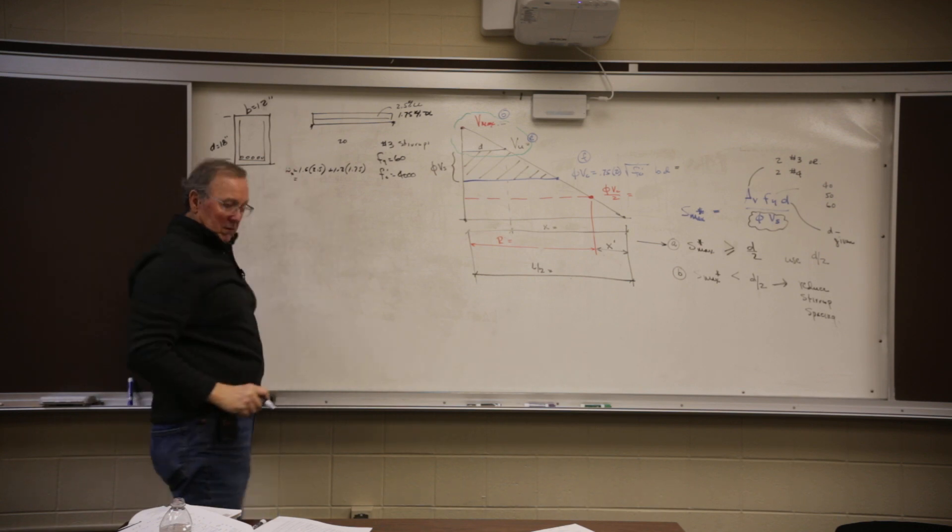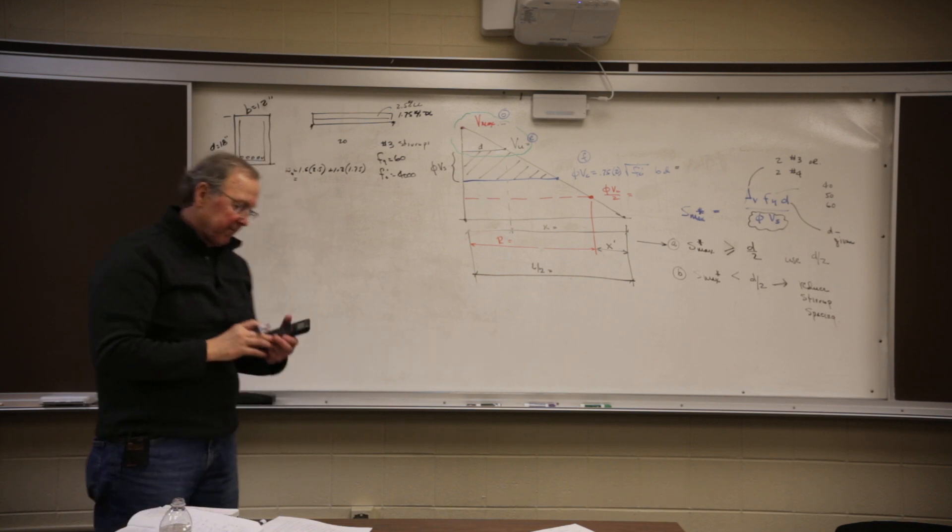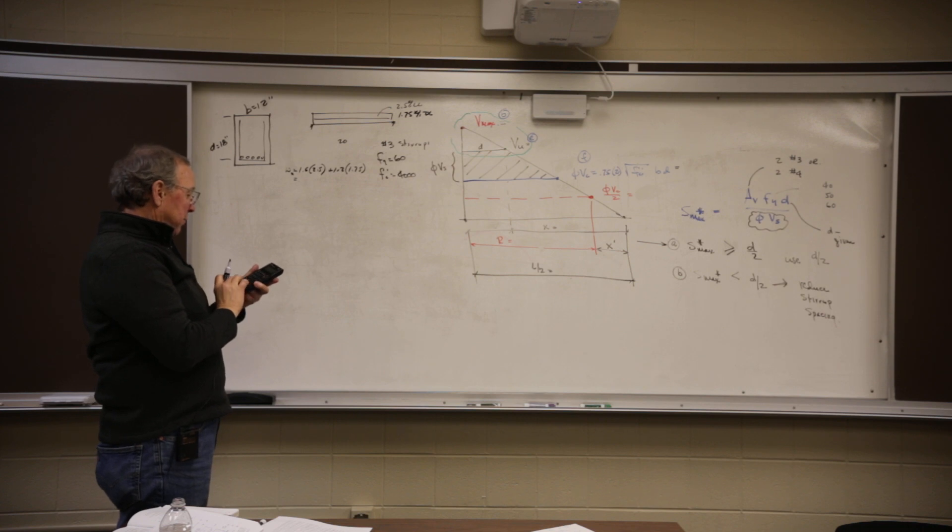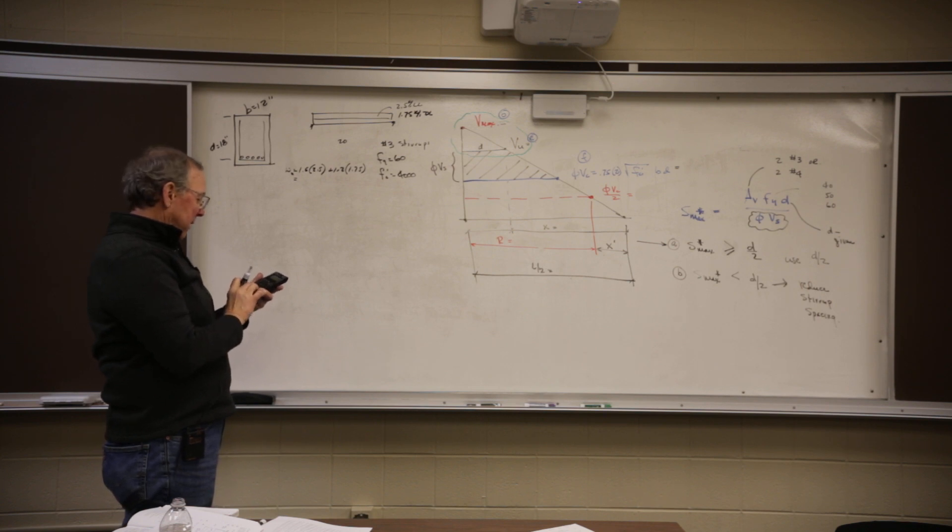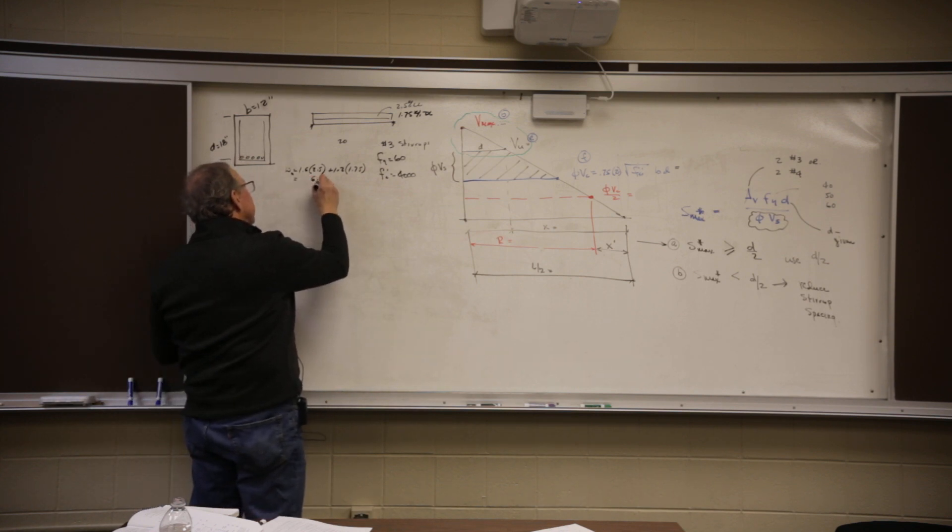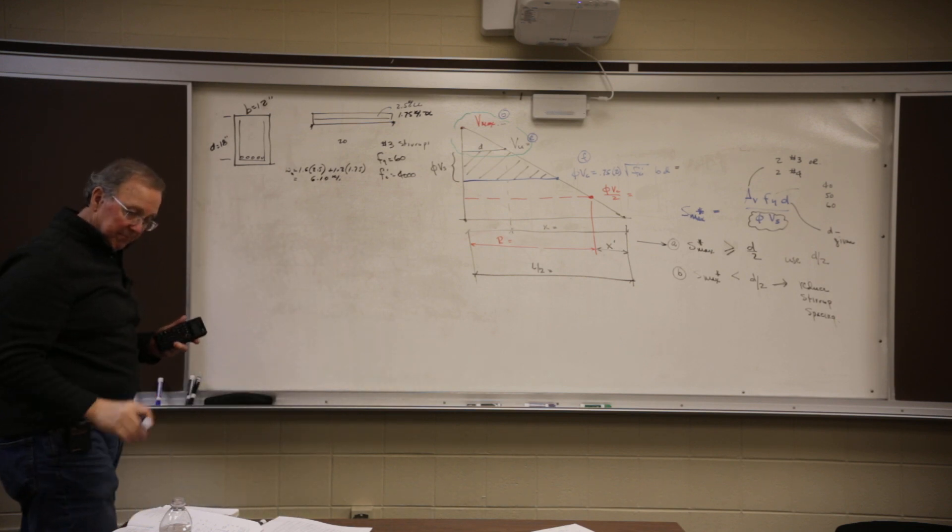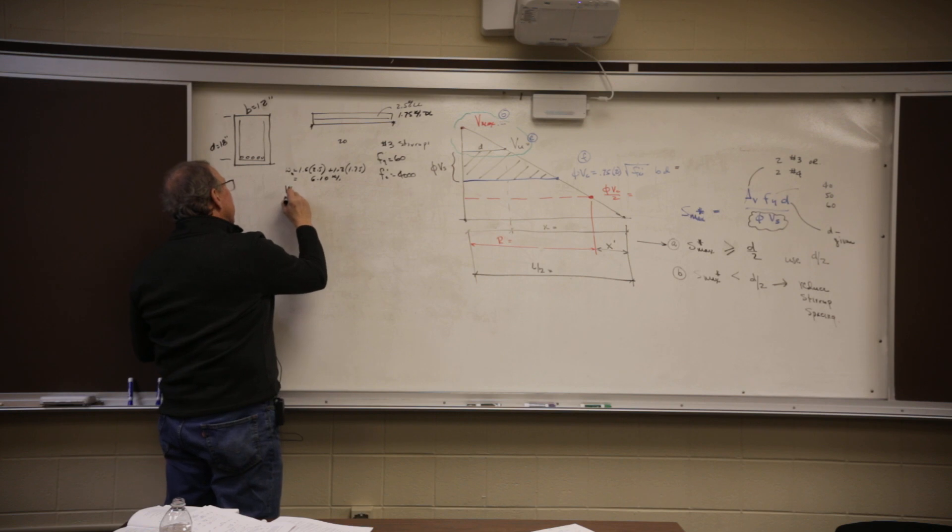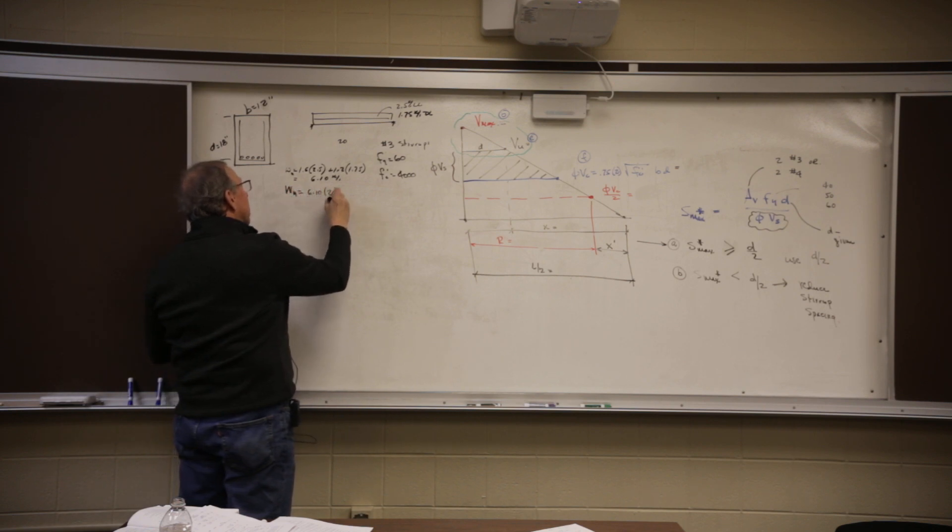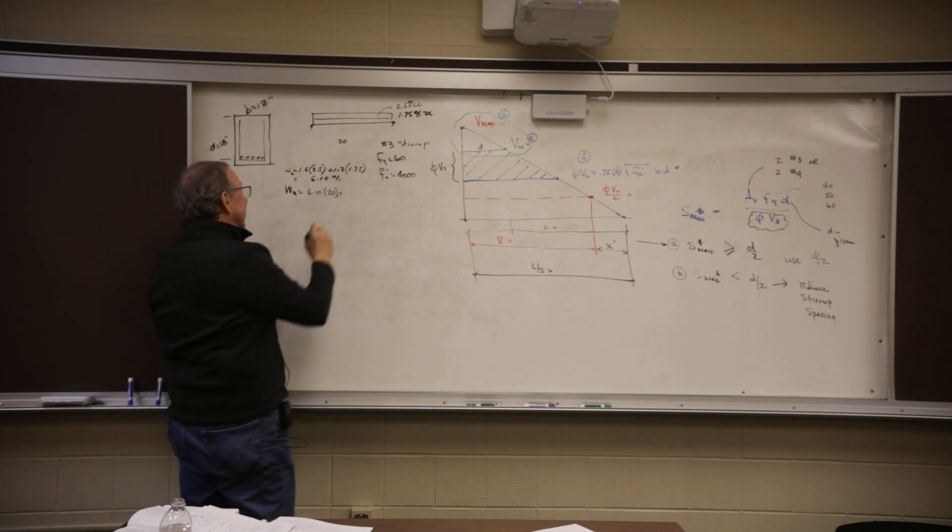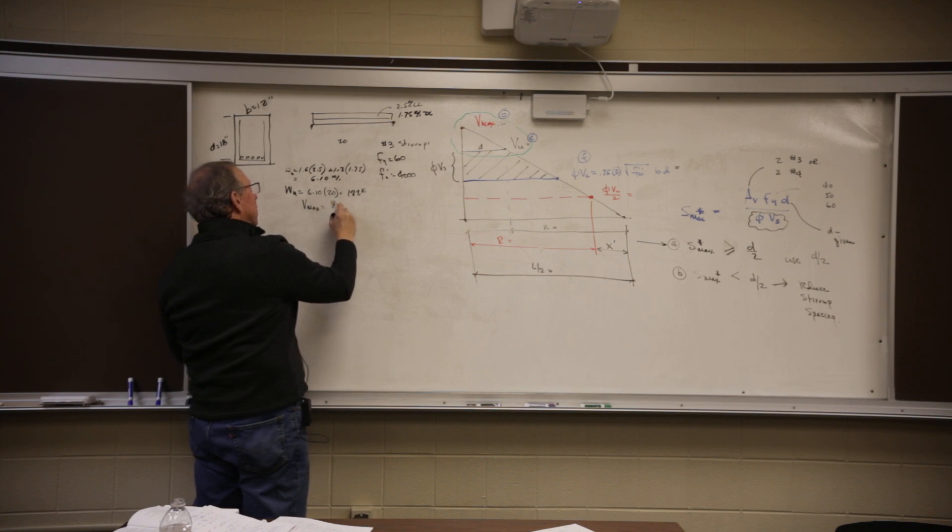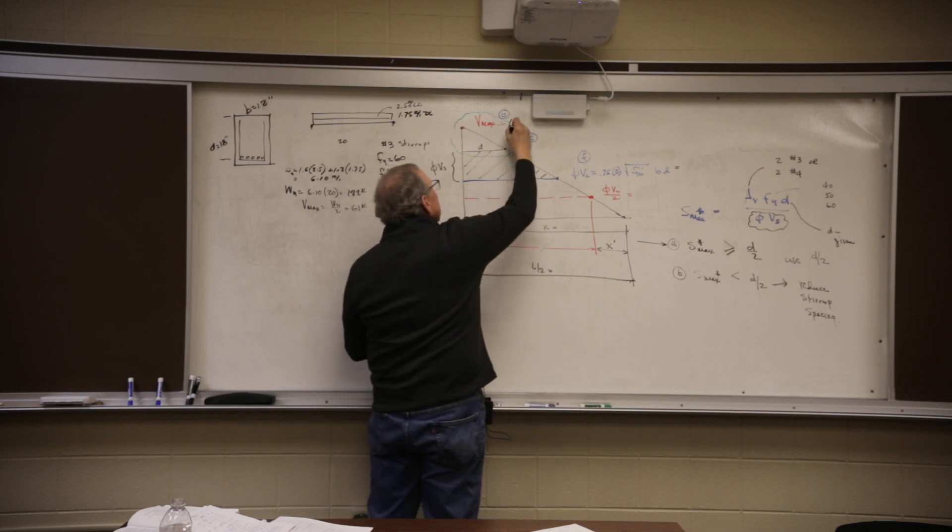Well, WU is 1.6 times 2.5 plus 1.2 times 1.75. So on your handout, I'm figuring out little WU. 1.2 dead, 1.6 live. So let's go 1.6 enter 2.5 times 1.2 enter 1.75 times plus 6.10. Okay 6.10. Big WU then equals little WU times the length. So I take that and I multiply it by 20. 122. V max is WU divided by 2. There's my first number. 61 kips.